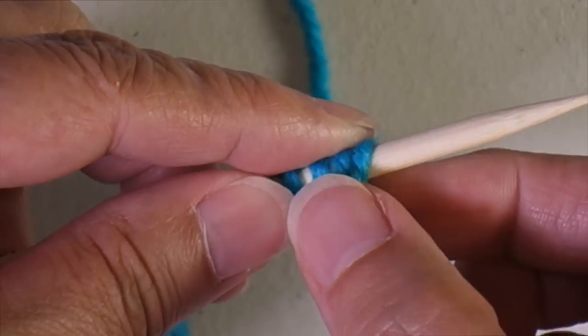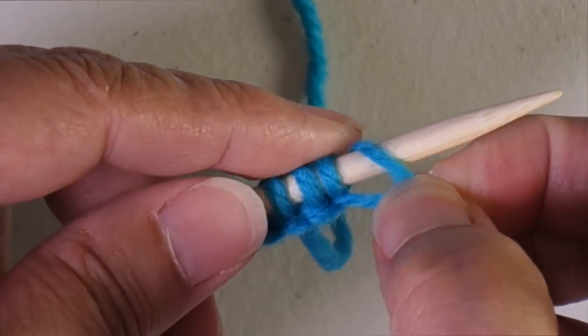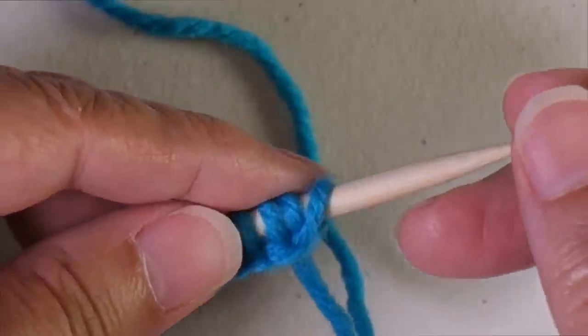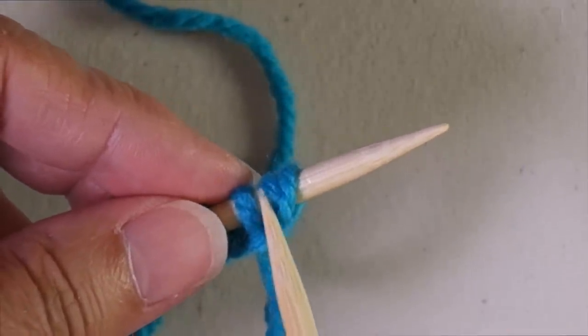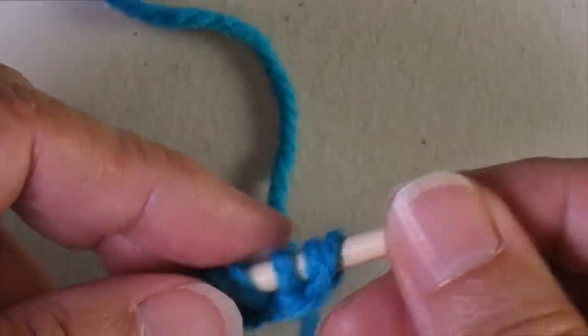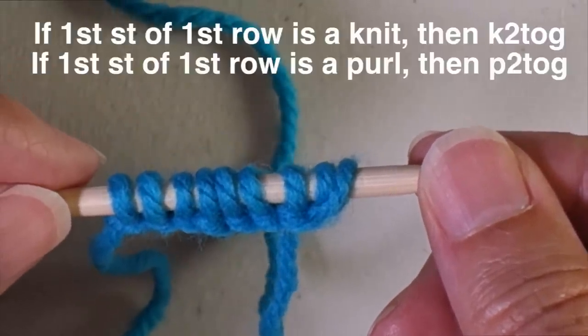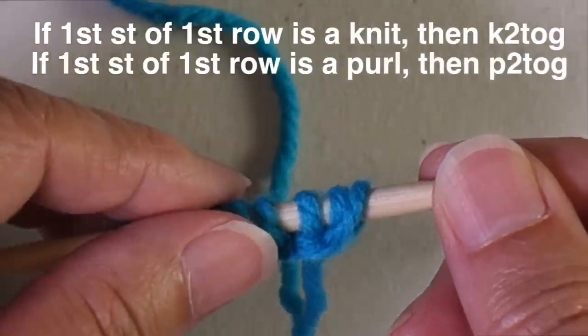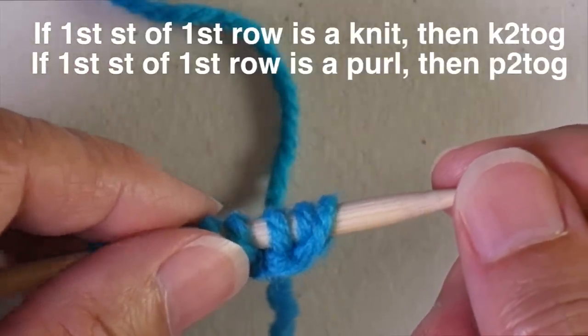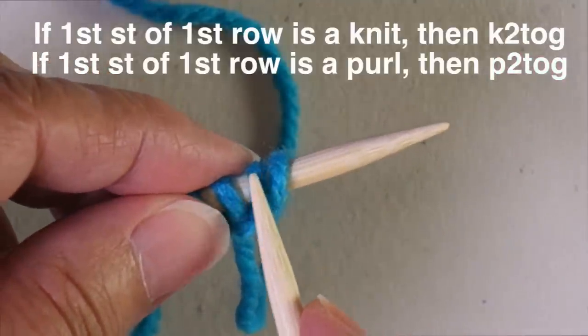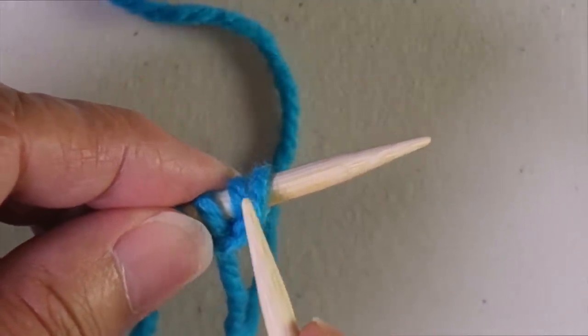And what we will do to eliminate this last stitch that's a little bit wonkier, not quite the same, is we're going to decrease it together with the second stitch. So whatever your pattern says is the first stitch of the first row, if it's a knit, then we're going to do a knit two together. If it says it's a purl, then you're going to do a purl two together. And that will place the second stitch on top of this other one.